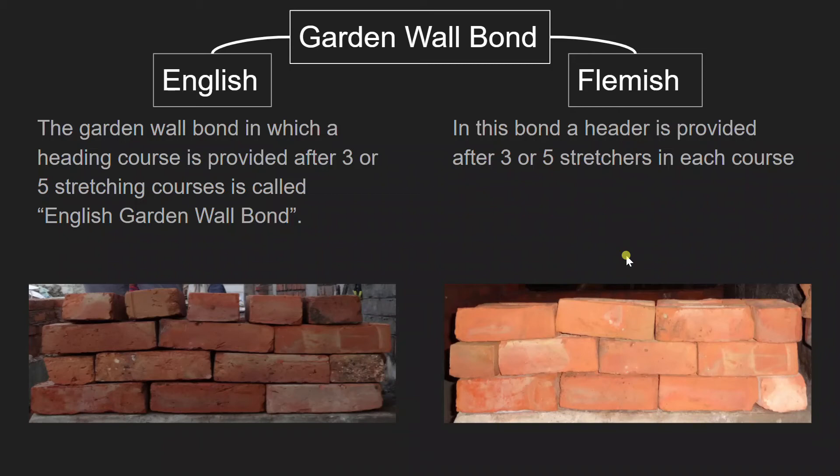For Flemish garden wall bond, we have a header after three or five stretchers in each course. In the image attached with it, we see that there are three stretchers in a row and then one header in every course.